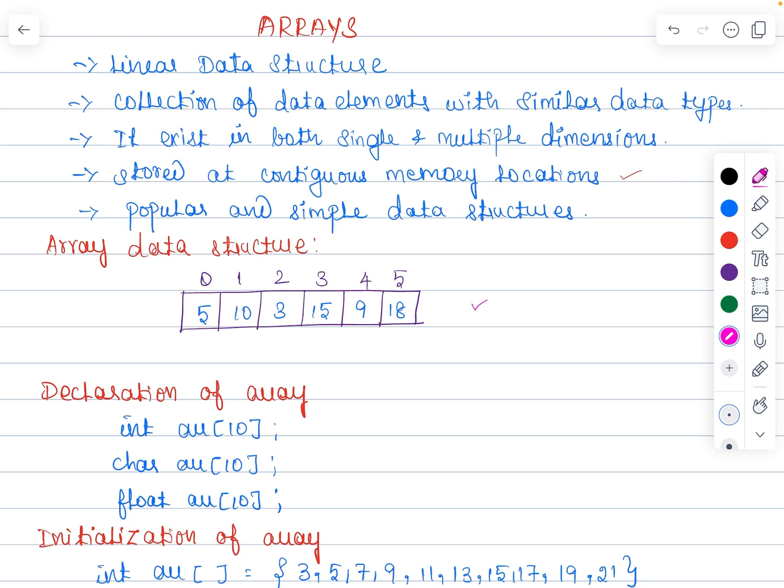Arrays exist in both single dimension as well as multiple dimensions and each item in an array is indexed starting with 0 and we can directly access an array element by using its index value.